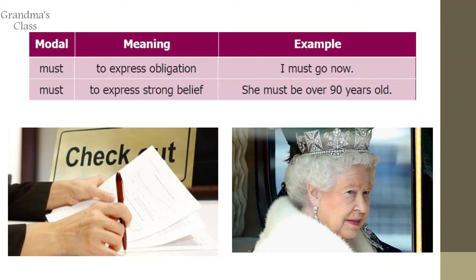The next one is 'must'. It is also used in two different situations. One is to express obligation — for example, 'I must go now' or 'I must take my lunch'. The next usage is to express strong belief — for example, 'She must be over 90 years old' or 'It must be a great opportunity for me'.